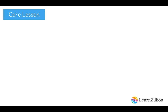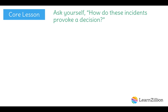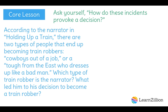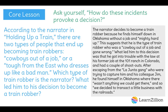Now that I've created the timeline and have a clear picture of the sequence of events, I'm going to ask myself how these incidents provoke the narrator's decision to rob trains. Let's go back to our original question. According to the narrator in 'Holding Up a Train,' there are two types of people that end up becoming train robbers: cowboys out of a job, or a tough from the east who dresses up like a bad man. Which type of train robber is the narrator? What led him to his decision to become a train robber? If you want to read my whole response, just pause the video so you can read it and then restart it again.